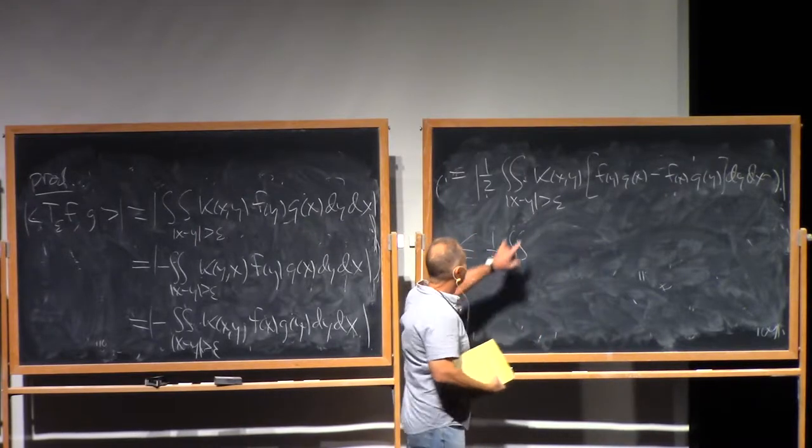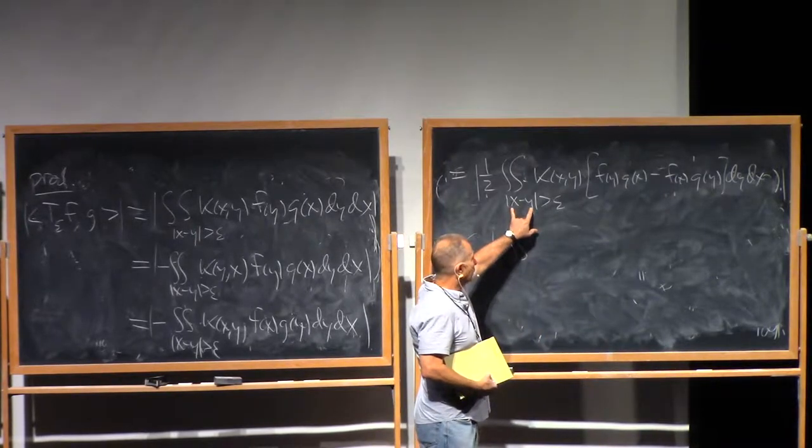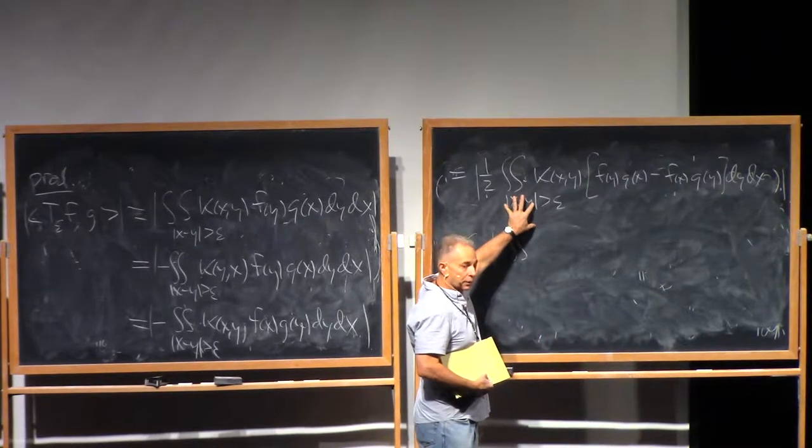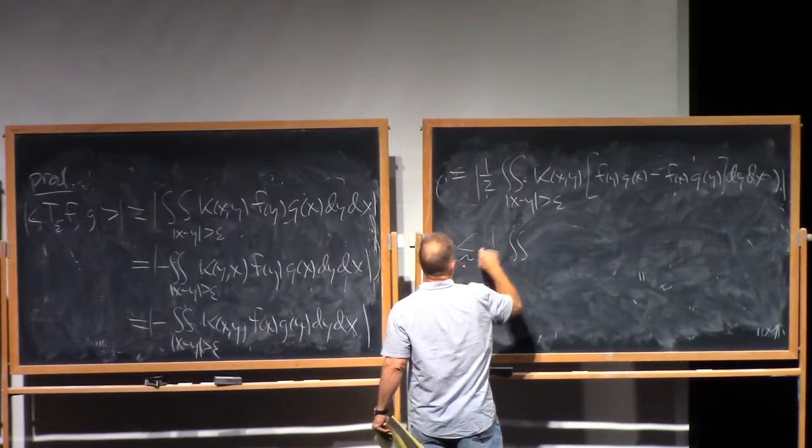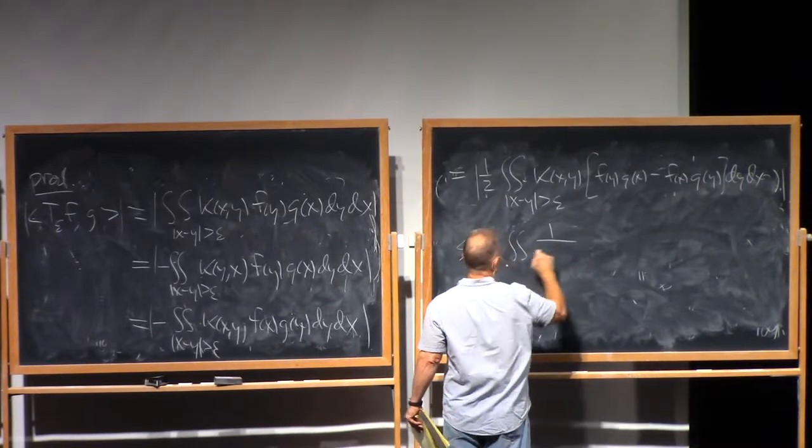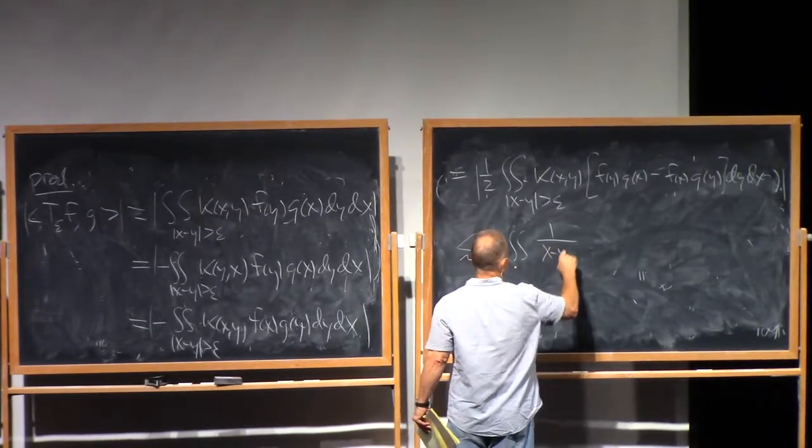And when I do that, I'm just going to crudely integrate over all of R^n cross R^n. And I'm going to use the Calderón-Zygmund size condition. So up to a constant, this is one over x minus y to the n.